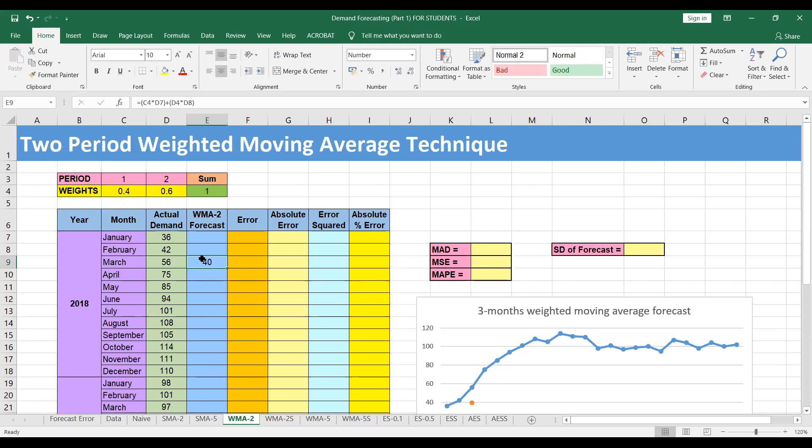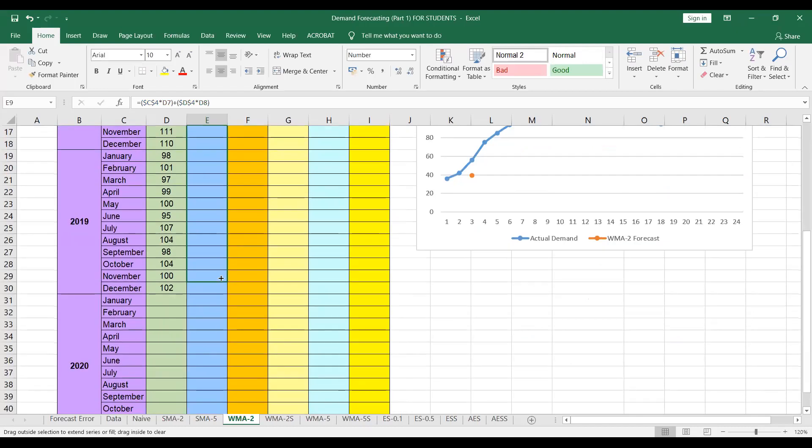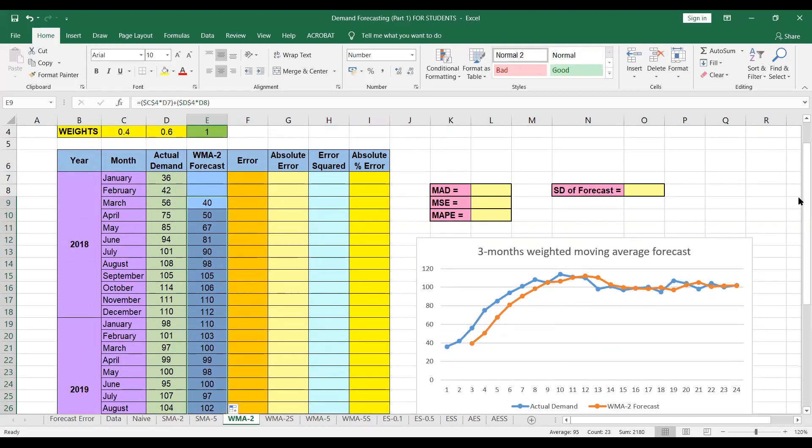Now we can apply the formula in each cell that will take a lot of time. So simple solution is to fix the cells for the weights. So I simply click this cell C4 that is having the weight 0.4 and press F4 on my keyboard or for some of you, it might be function F4. The same thing I do for the second weight that is in cell D4. So I fix this cell as well. And then you can simply drag to find the forecast for the rest of the periods.